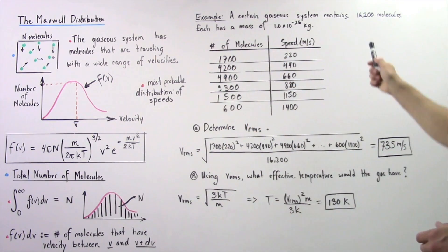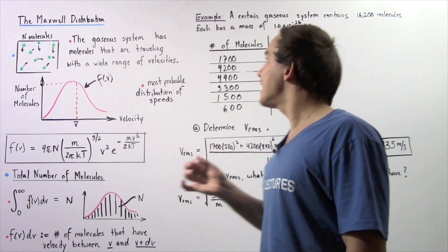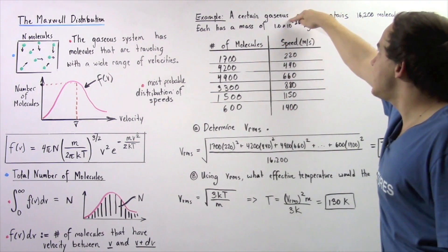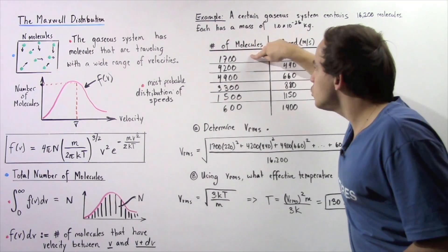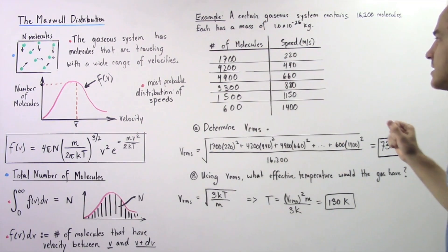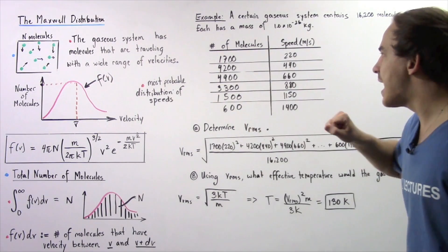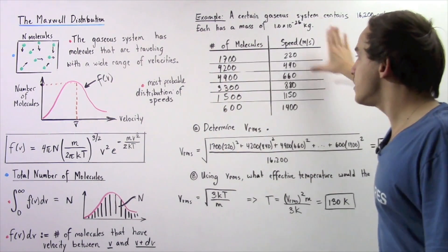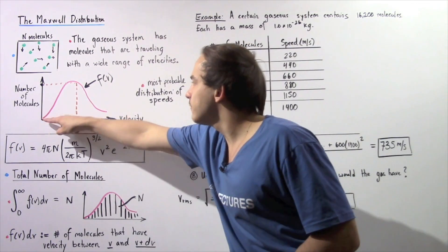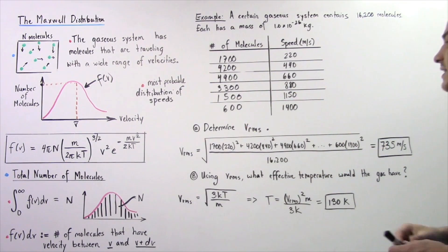A certain gaseous system contains 16,200 gas molecules, so n = 16,200. Each gas molecule has a mass of 1.0 × 10⁻²⁶ kg. The Maxwell distribution data shows: 1,700 molecules at 220 m/s, 4,200 molecules at 440 m/s, and so on down to 600 molecules at 1,400 m/s. Plotting these values on the xy-axis gives the Maxwell distribution curve of speeds for our gaseous molecules.